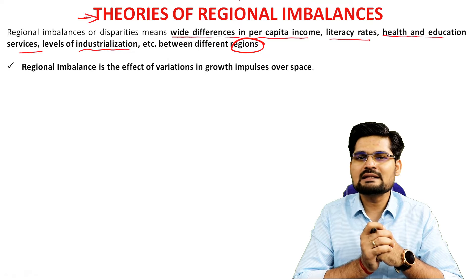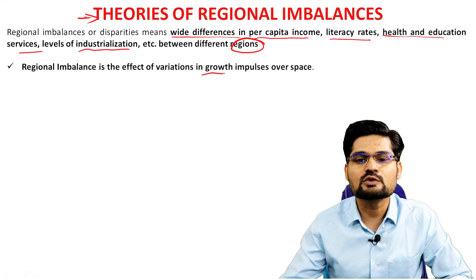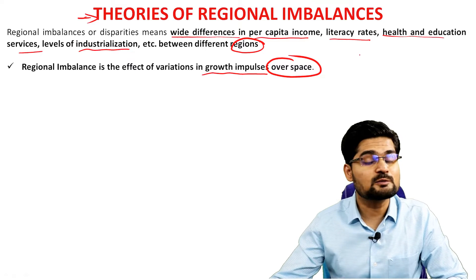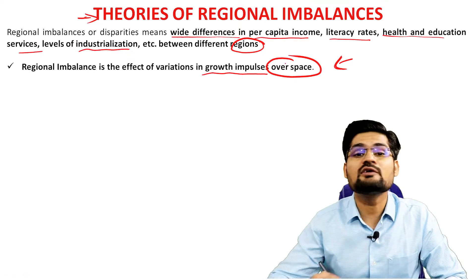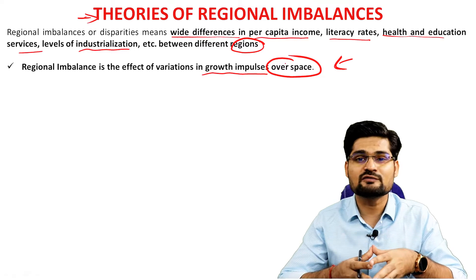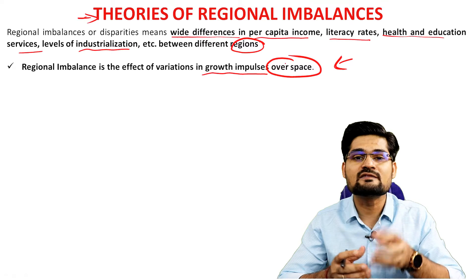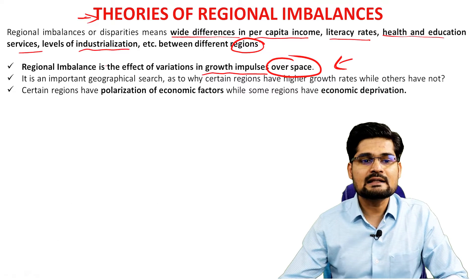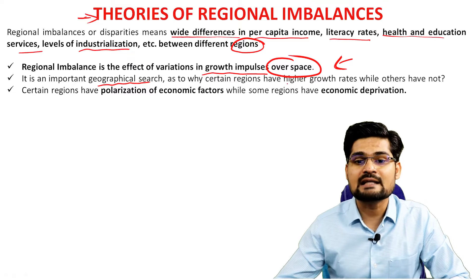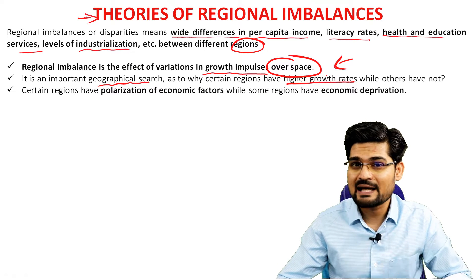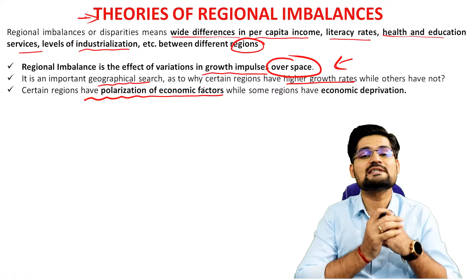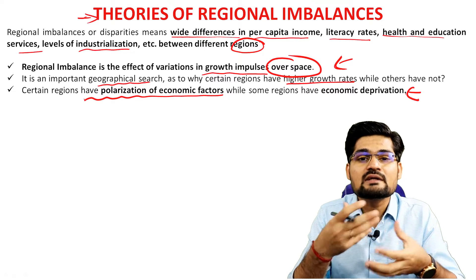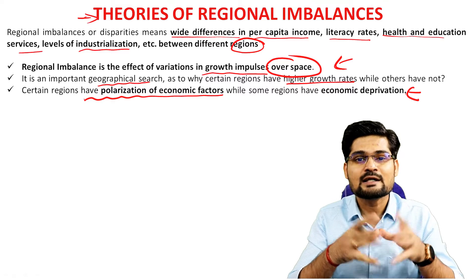Regional imbalance is the effect of variations and growth impulses over space — growth is non-uniform. We talked about this in growth pole theory and Schumpeter's analysis. Because of this non-uniformity, only a few centers achieve desired growth levels while the rest do not, creating disparity and imbalance. This is an important geographical question: why do certain regions have higher growth rates while others experience polarization of economic factors and economic deprivation? This is what gives birth to regional development and regional imbalance theories.